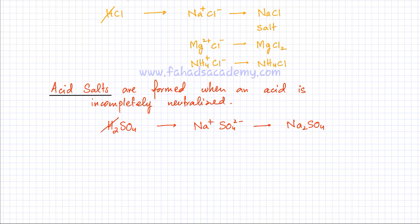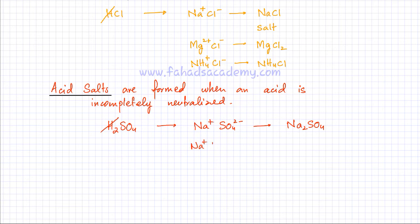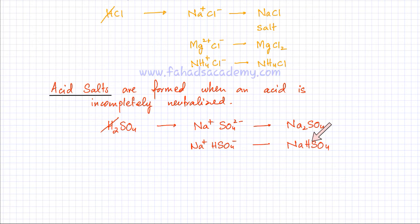Incomplete neutralization means I don't get rid of both H⁺ ions — let's say I get rid of only one of them. One H⁺ ion is still remaining, so the formula is now NaHSO₄. You can still see that there is one H⁺ still remaining that needs to be neutralized.